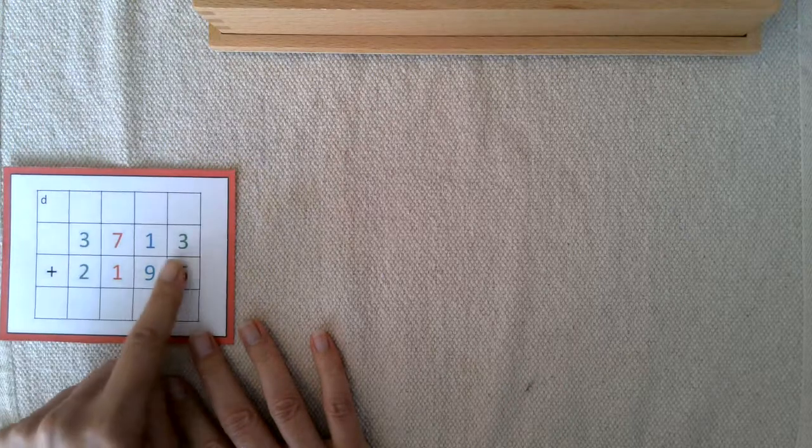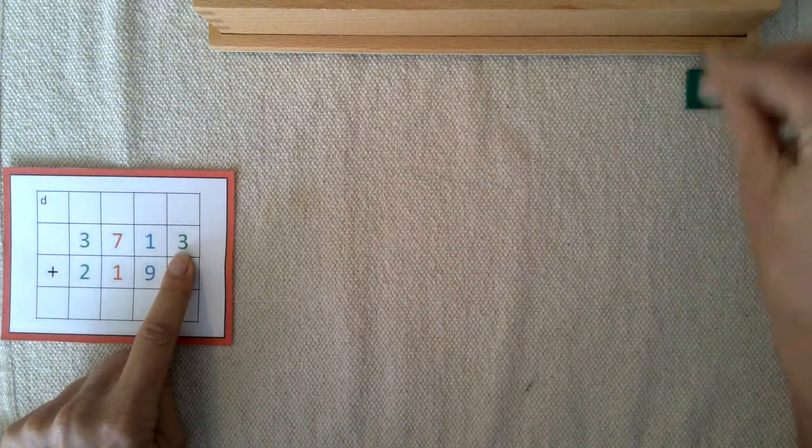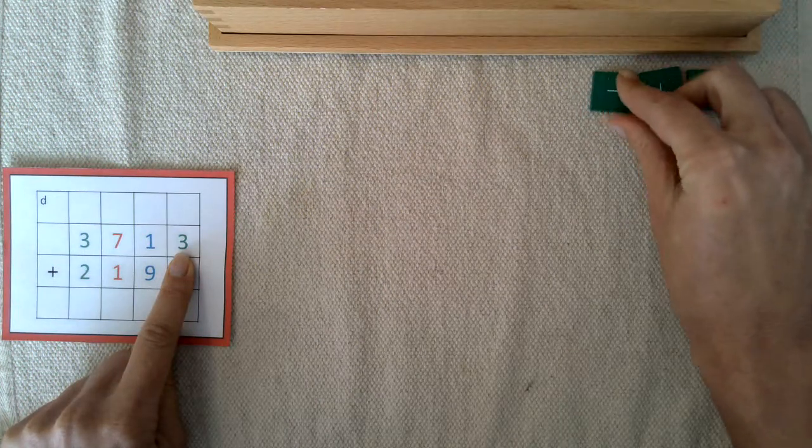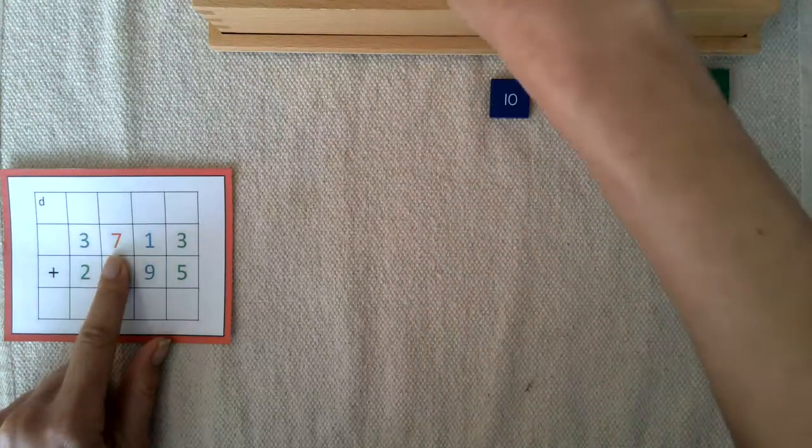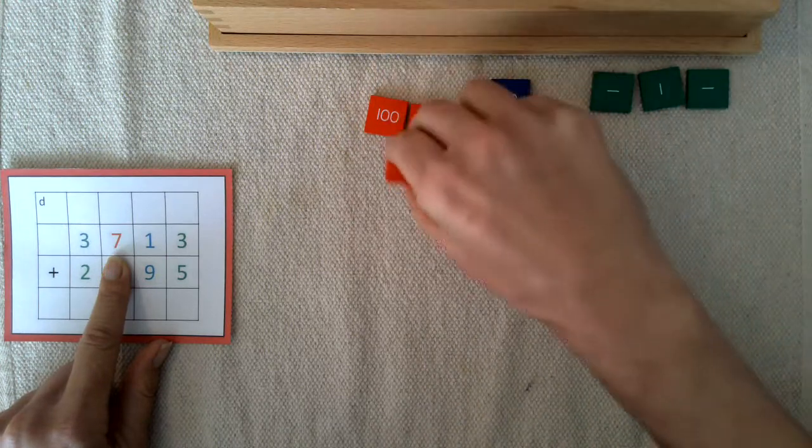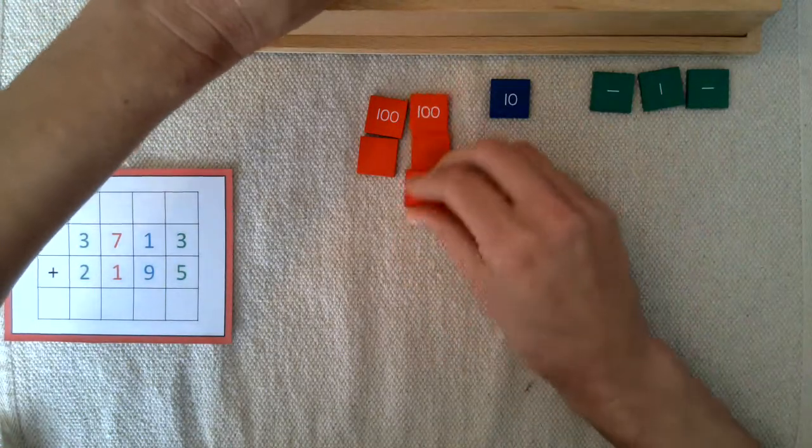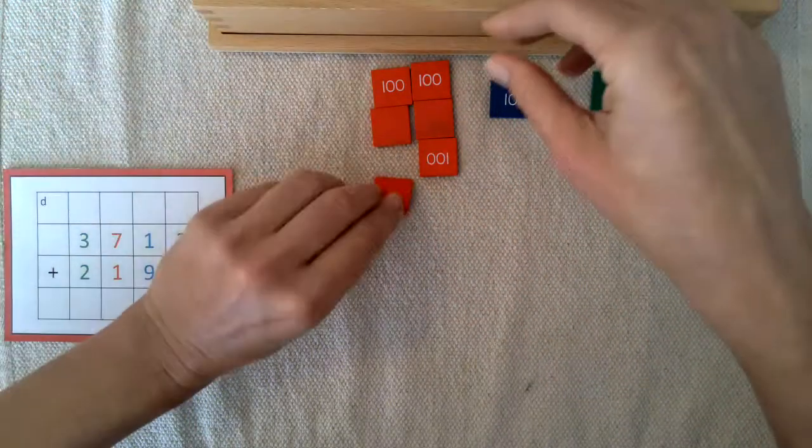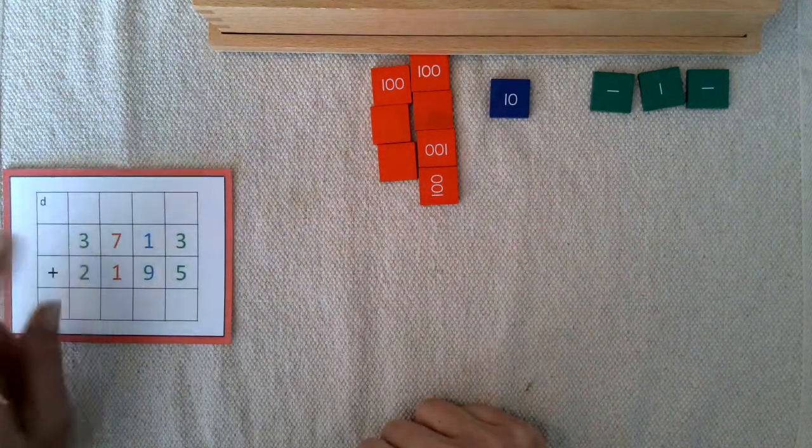And then we'll build the first addend, starting with the units. So we have 3 units, 1 ten, 7 hundreds, and 3 thousands.